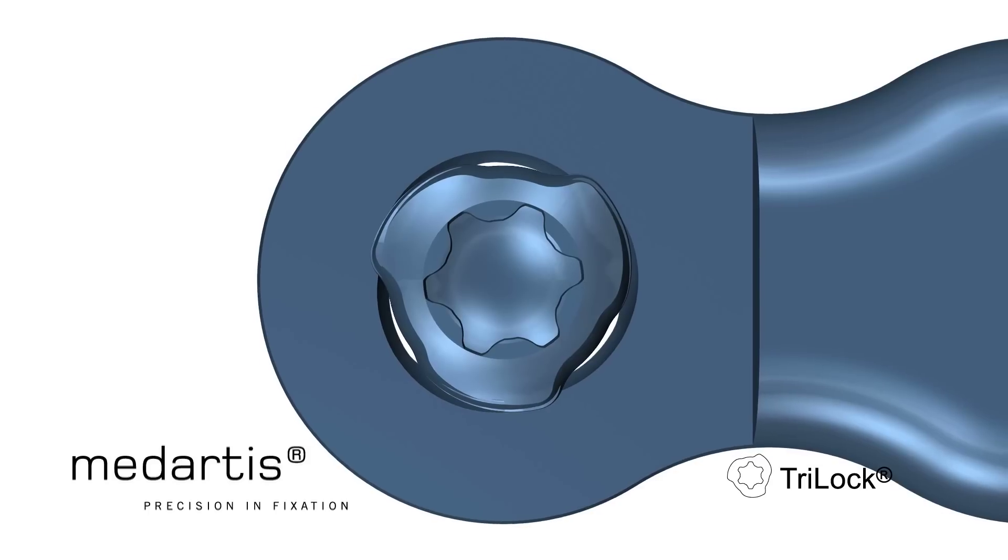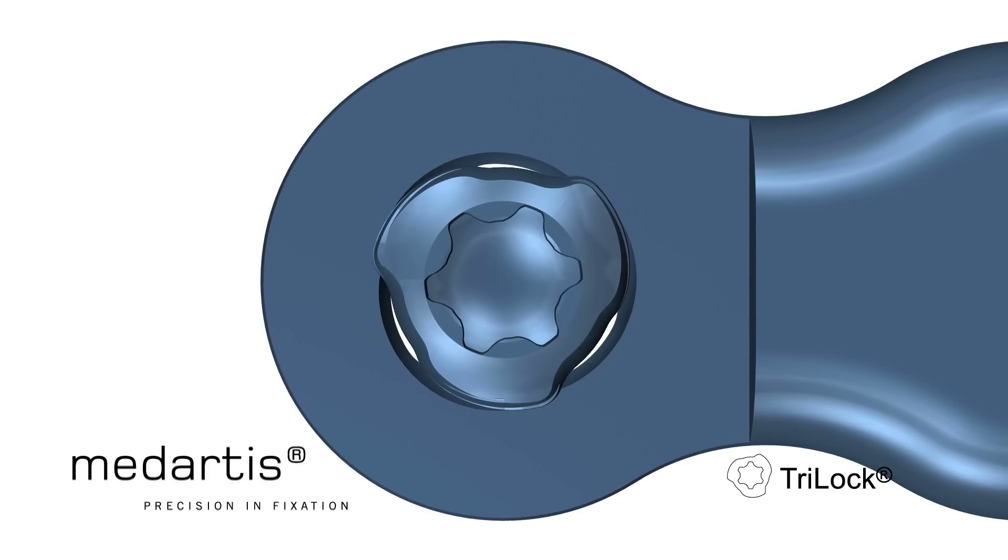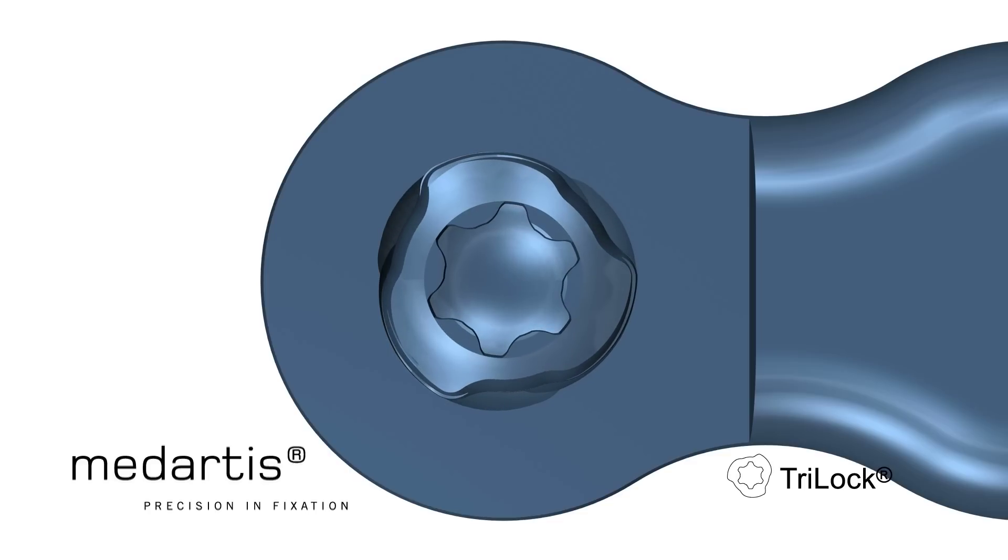In the unlocked state, there is a tiny gap between the screw head contour and the plate hole. This gap is gradually closed during the locking process. Once the contours meet, contact zones are created that grow bigger while an increasing torque is applied.